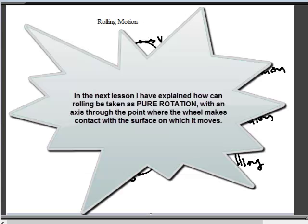In the next lesson, I've explained how rolling can be taken as pure rotation with an axis at the point where the wheel makes contact with the surface.